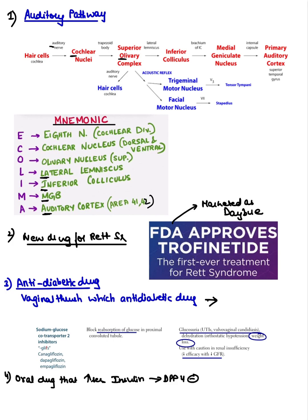The next question was on a new drug for Rett syndrome — that is trofinetide, marketed under the brand name Daybue.